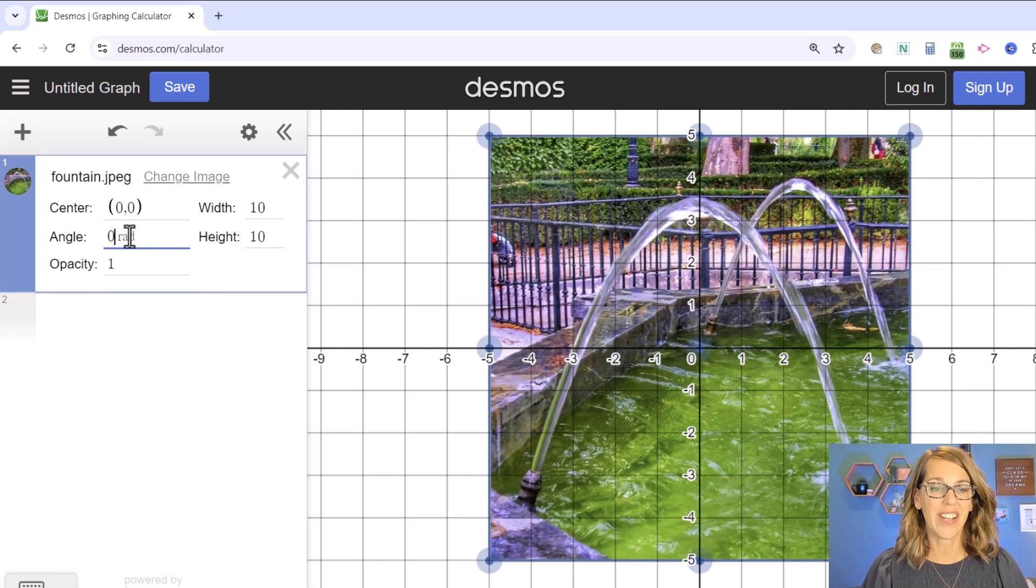You can also rotate this one by changing the angle measure and you can change the opacity, which I do want to do because I want to have a better look at my grid. So I'm going to change my opacity to maybe 0.6.